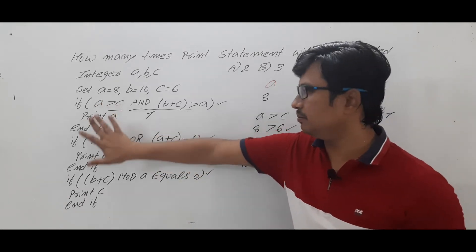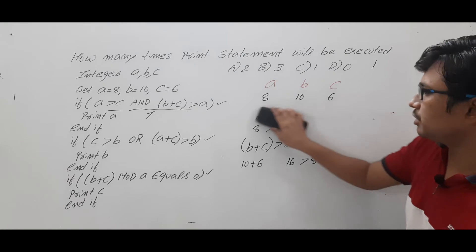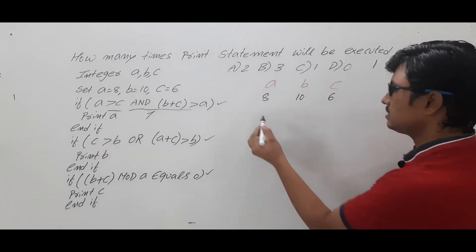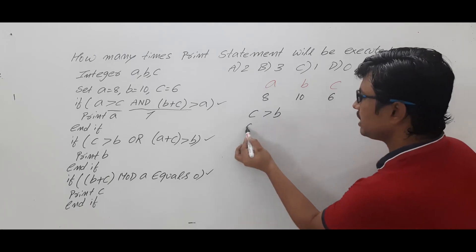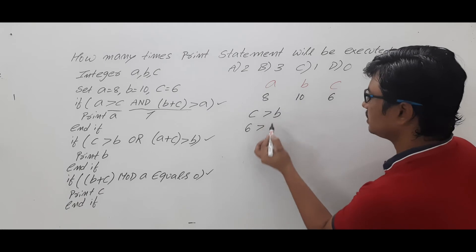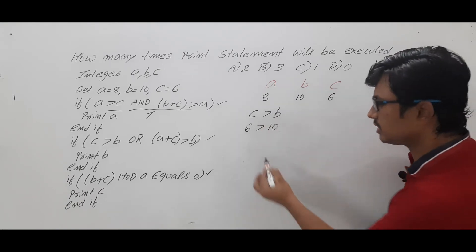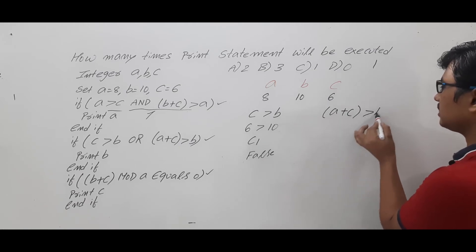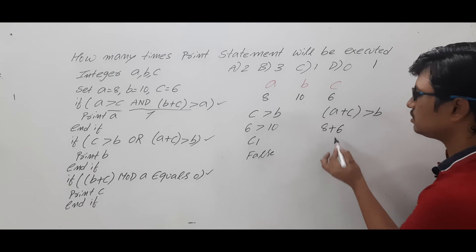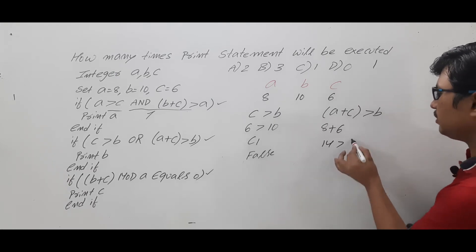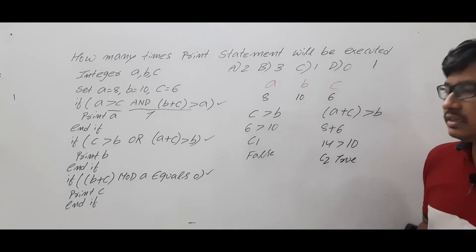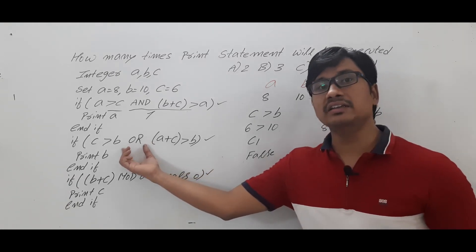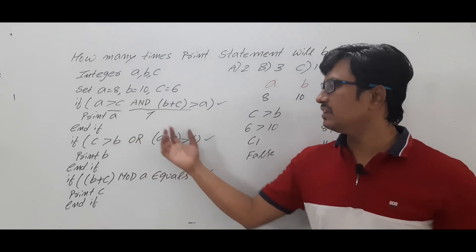Now look at the next condition: C greater than B — that is condition 1 — logical OR condition 2. C is 6 and B is 10, so condition 1 is false. But look at condition 2: A plus C greater than B. 8 plus 6 is 14, which is greater than B value 10 — condition 2 is true. Now, this is not logical AND, this is logical OR. If any one condition is true, the entire condition will be true.